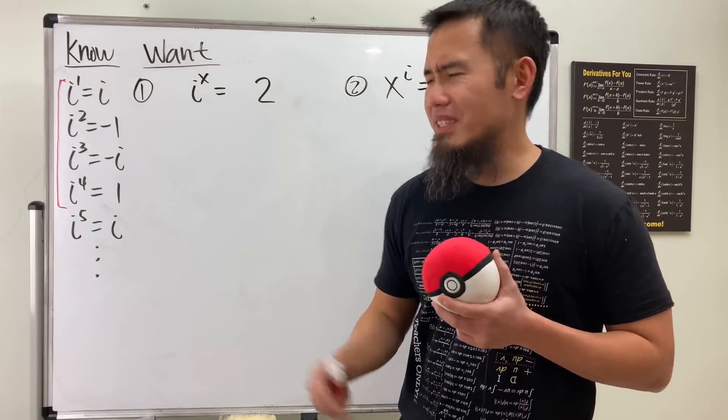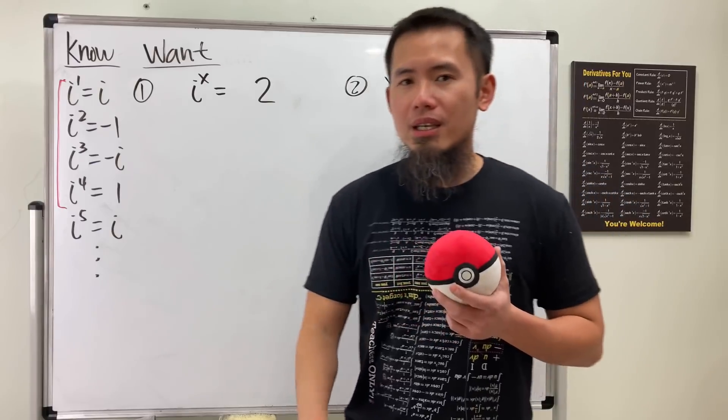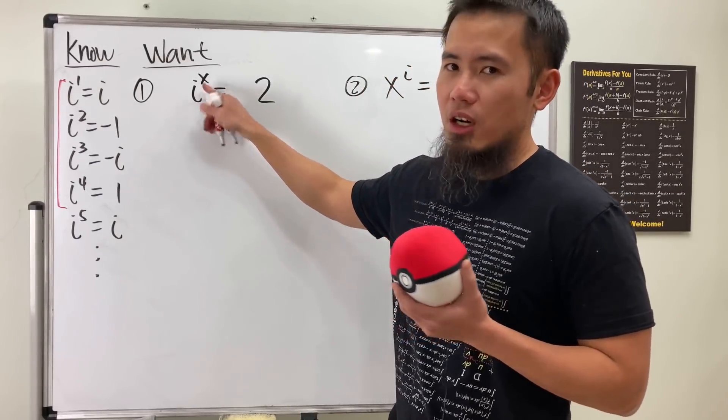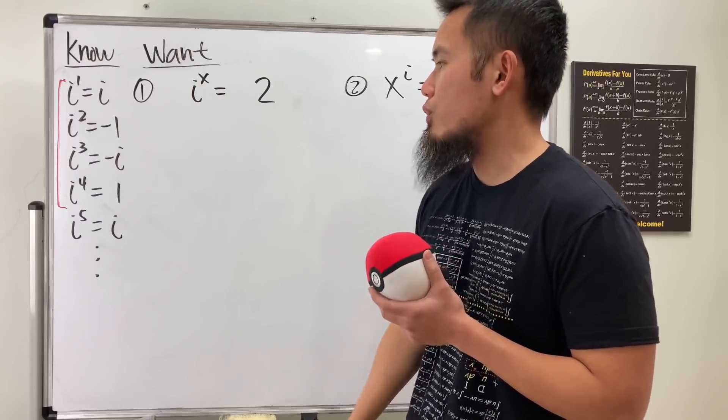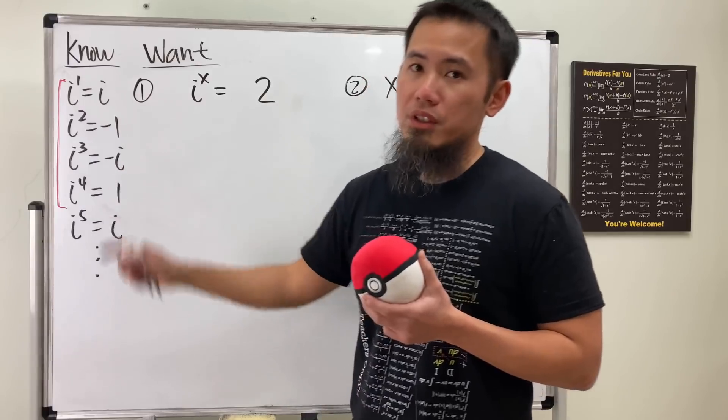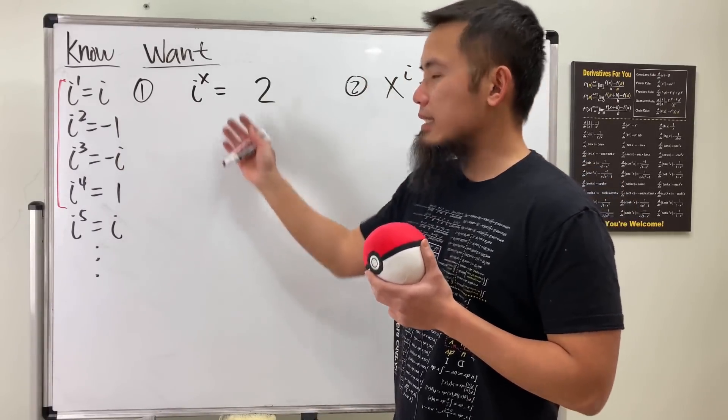Now, have you ever wondered if it's possible to have i to some power and we end up with 2? What do you guys think? Yes, it's of course possible. However, in this case here, the power is not going to be just a whole number or an integer.